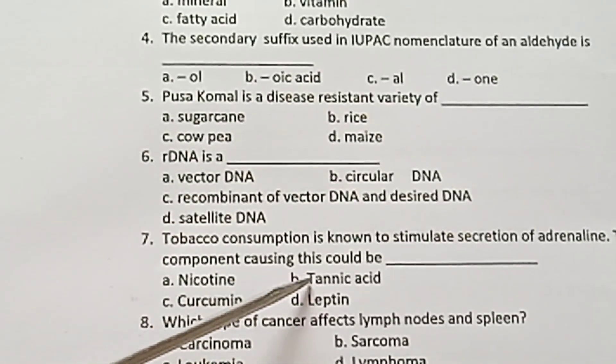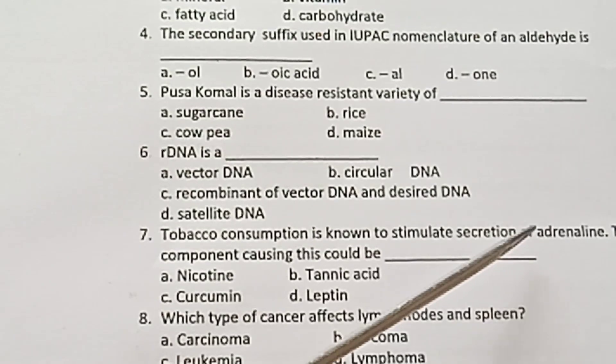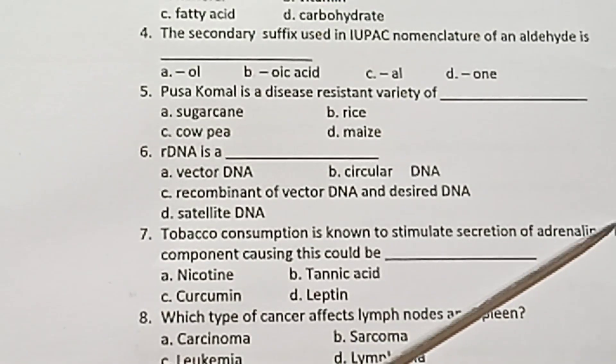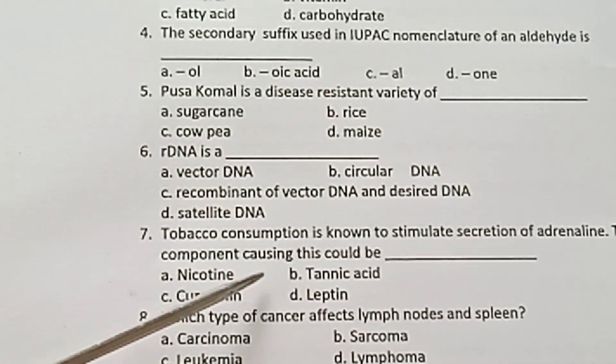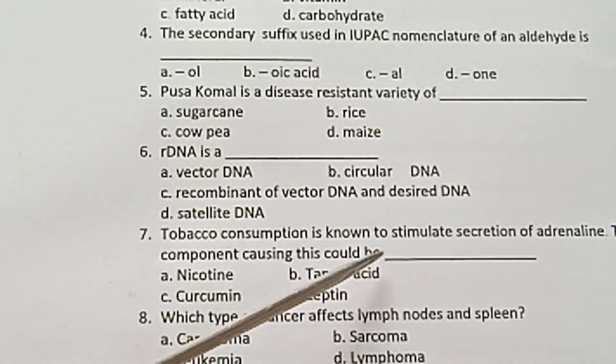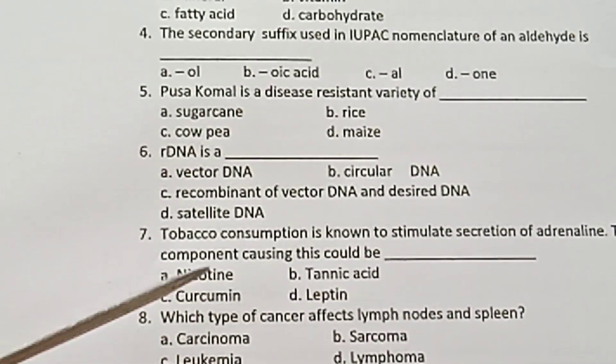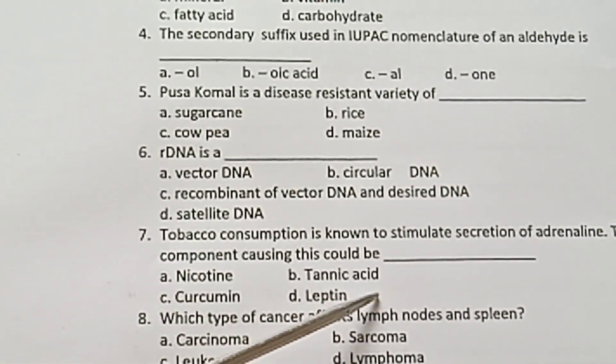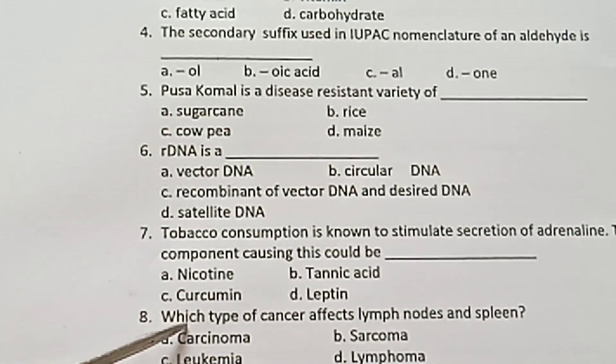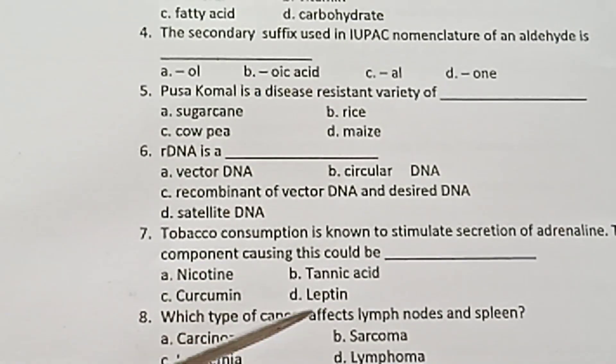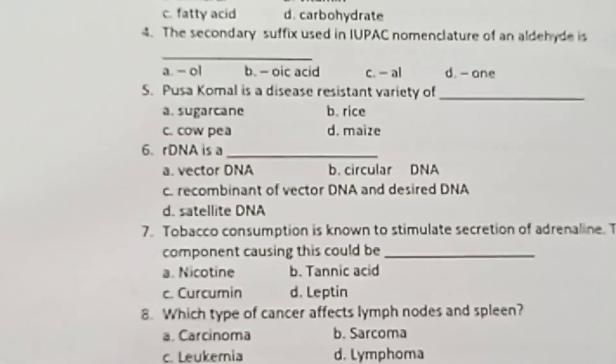Question 7: Tobacco consumption is a notion of Adrenaline. The component causing this would be — A) Nicotine, B) Tannic Acid, C) Curcumin, D) Leptin.